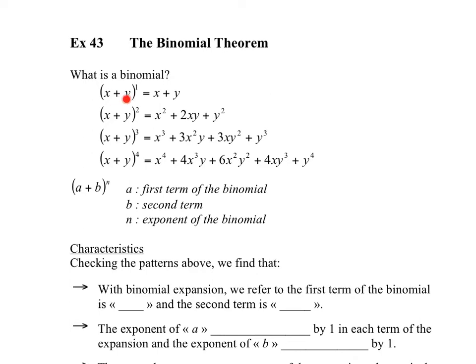So if you take the binomial x plus y to the power of 1, you get x plus y. x plus y to the power of 2, you get a trinomial. x plus y to the power of 3, and so on. When we talk about a binomial, we state a as the first term, b as the second term, and n as the exponent.